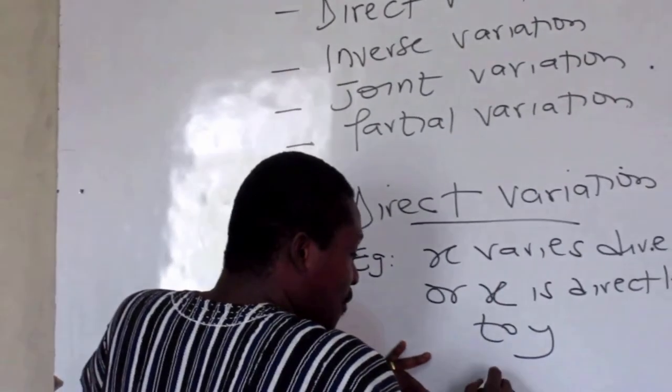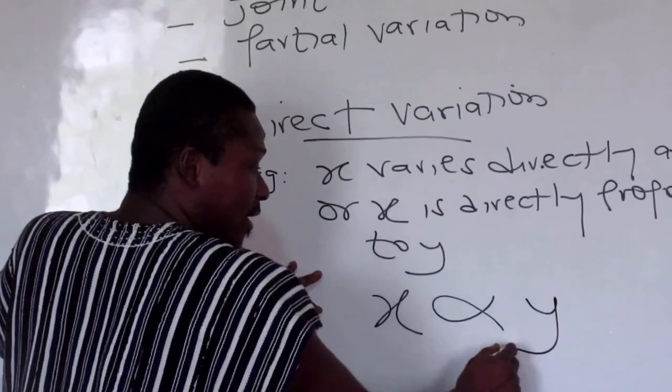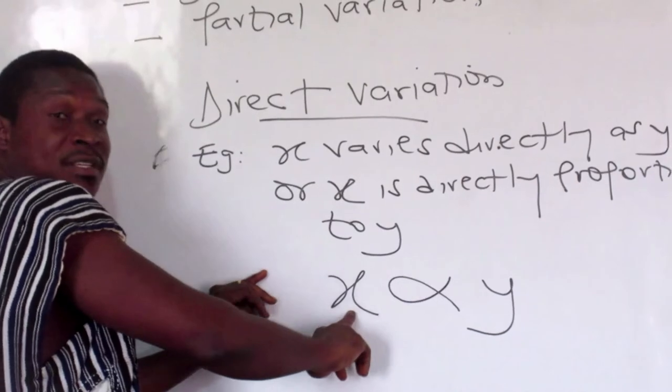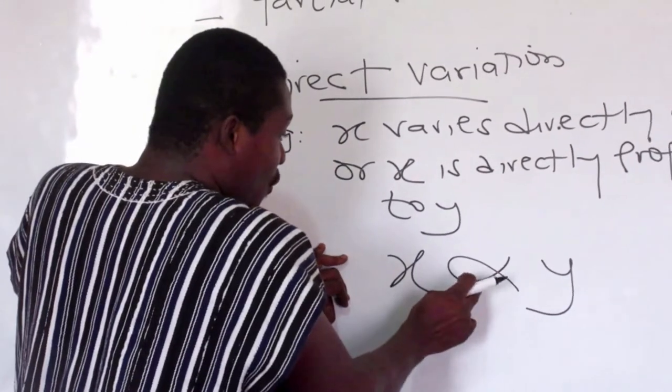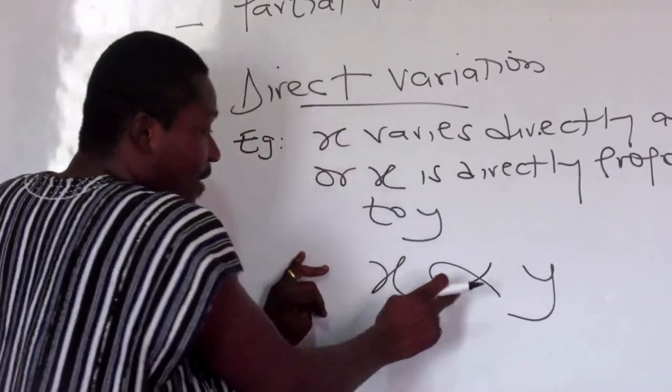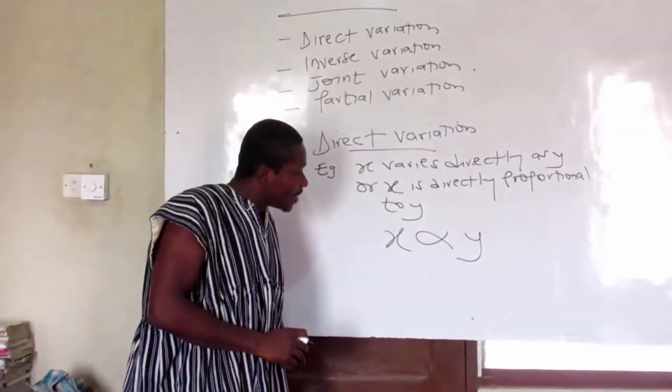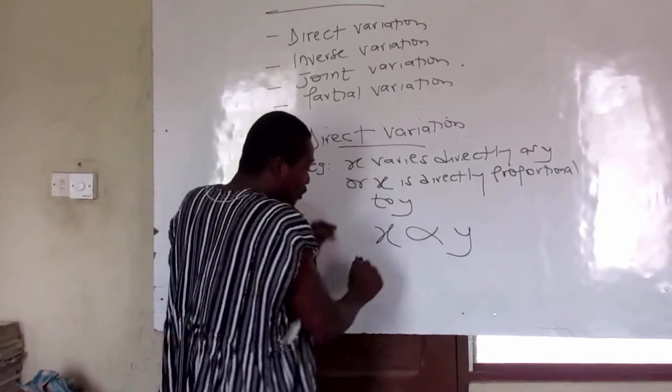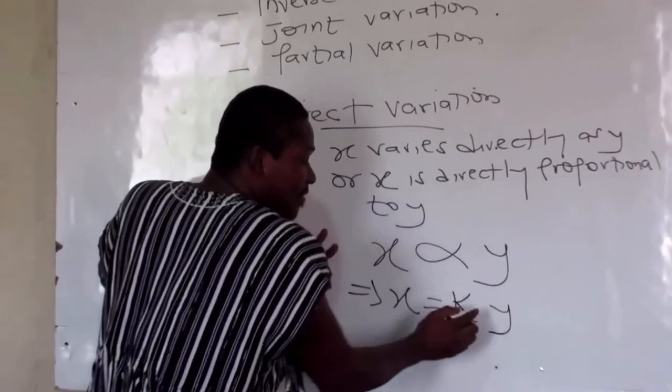So that is the statement. How can we quantify this mathematically? So it goes this way: x varies directly as y. So what does it mean? So as x increases, y also increases. Now what you see here is not a fish, it's a proportional sign. So when we get rid of this proportional sign, we introduce an equal to a constant, as you can see here.